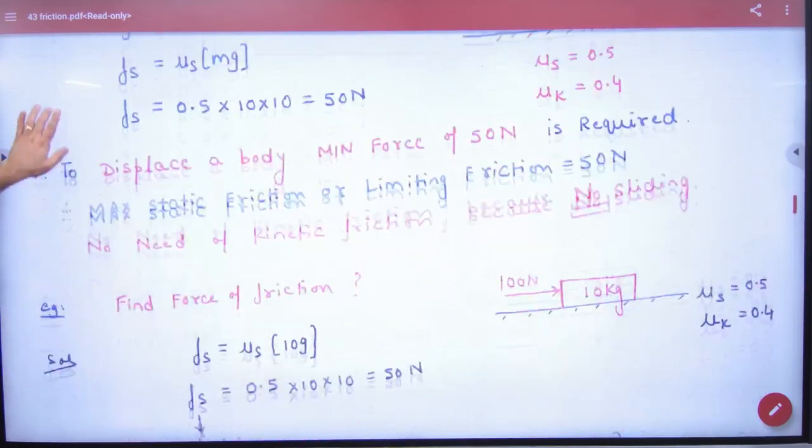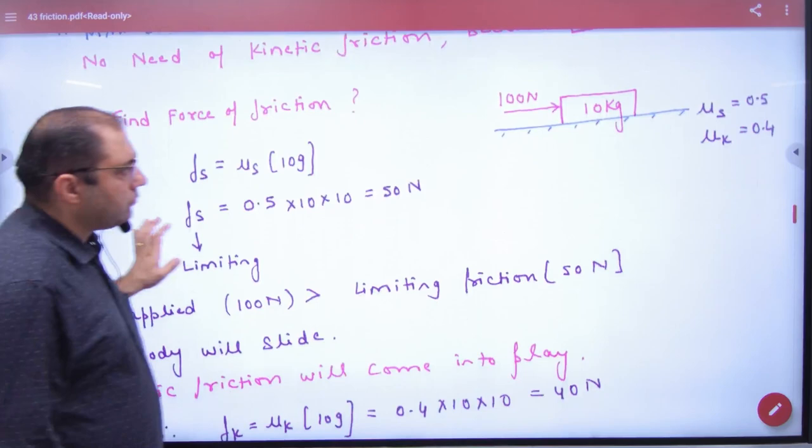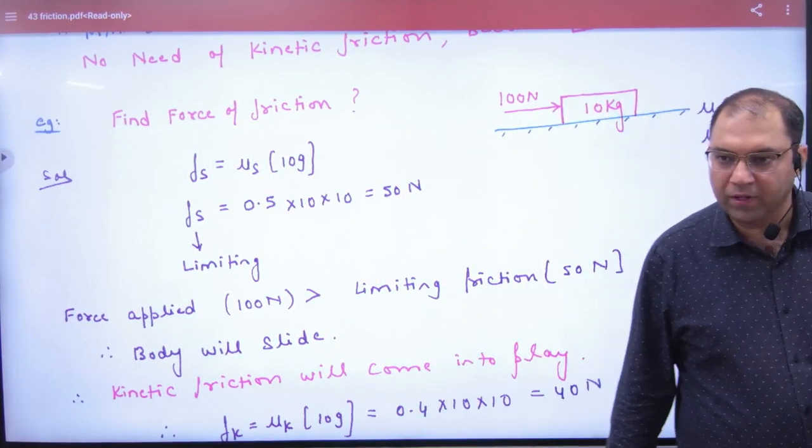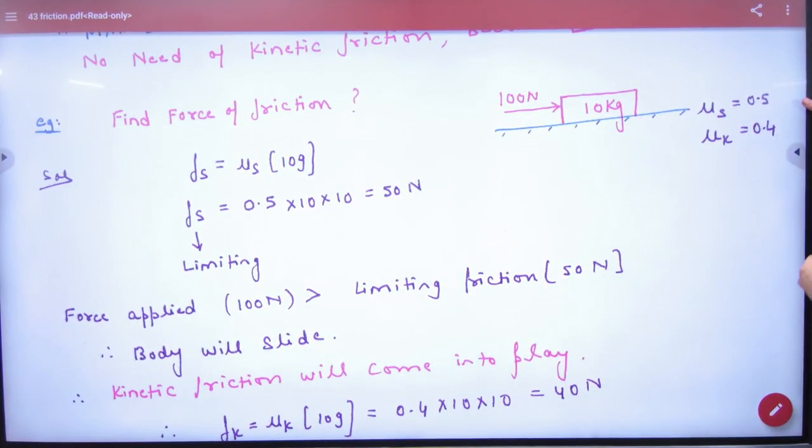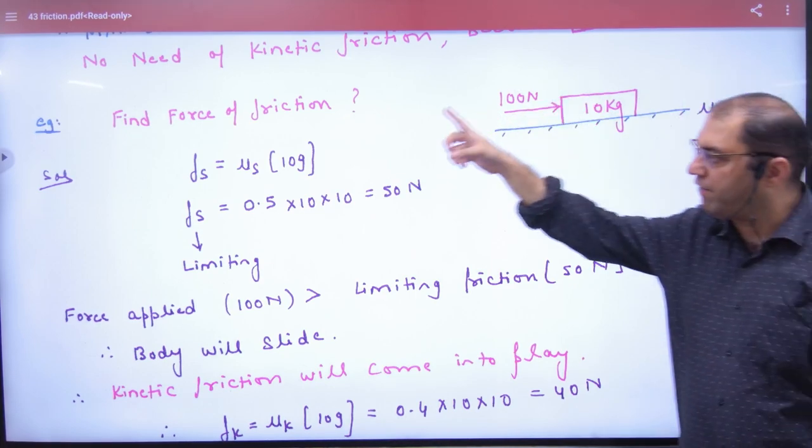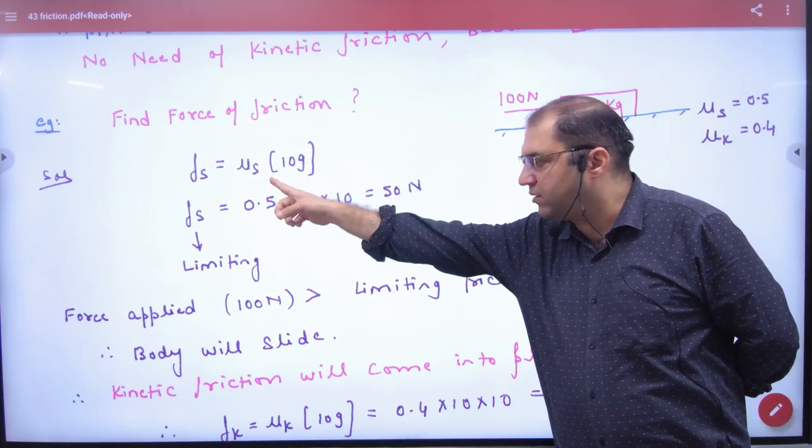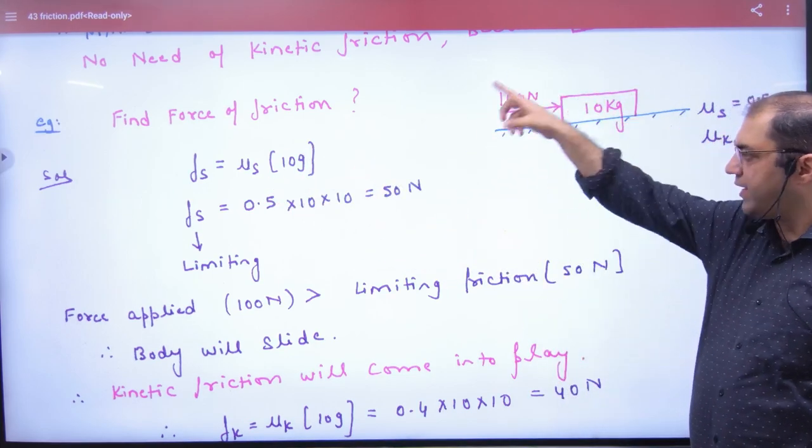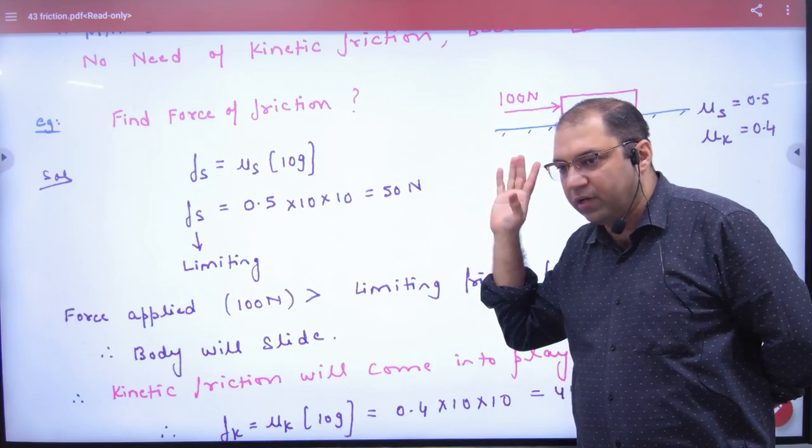Understand that in this question, 100 N force is on a 10 kg object and the mu s and mu k will always be given. Will the body move or not? Fs will decide, mu s will decide. Normal reaction 10g, solve it by 50 N. Limiting value is coming.